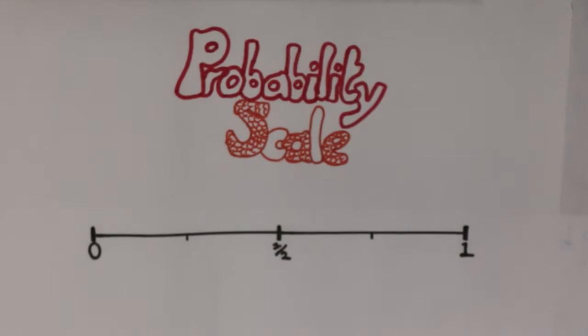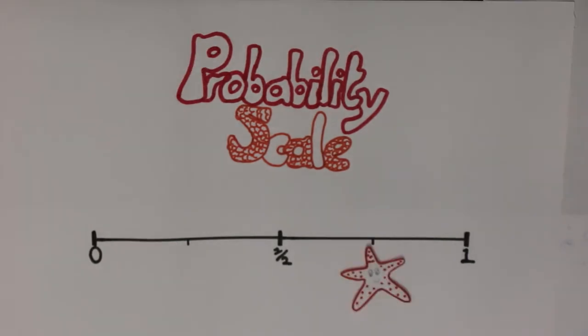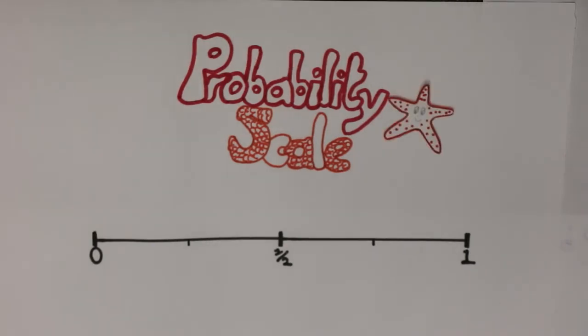This is the probability scale. The points on the scale are impossible, unlikely, even, likely, and certain. It shows the likelihood of certain events happening. For example, it is impossible you will get a dinosaur for your birthday and certain that the sun will rise in the morning.